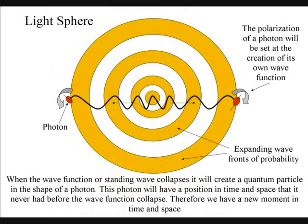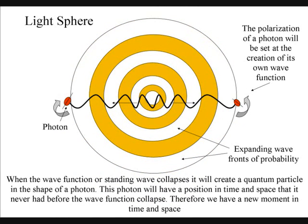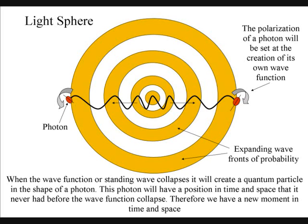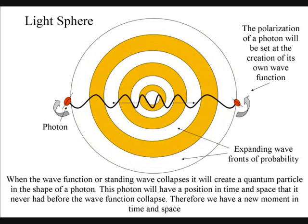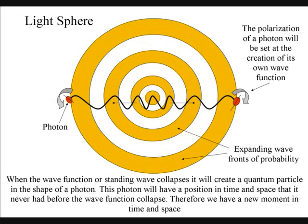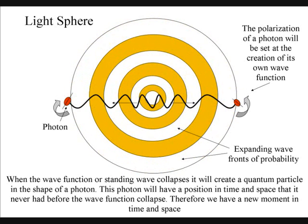The polarization of a photon will be set at the creation of its own standing wave function. This will remain the same however large the light sphere becomes, because when the wave function collapses, it will represent the same moment in time for both photons.